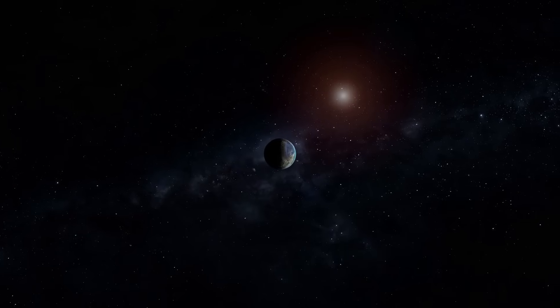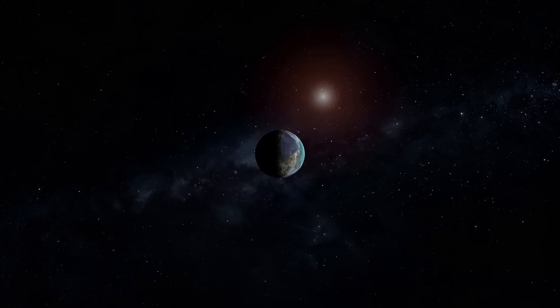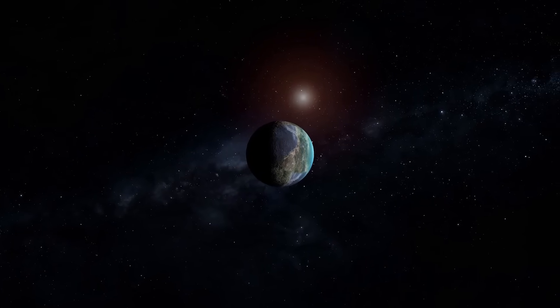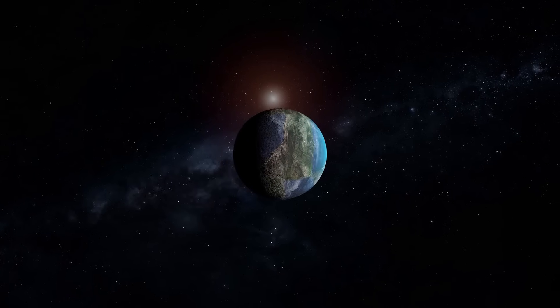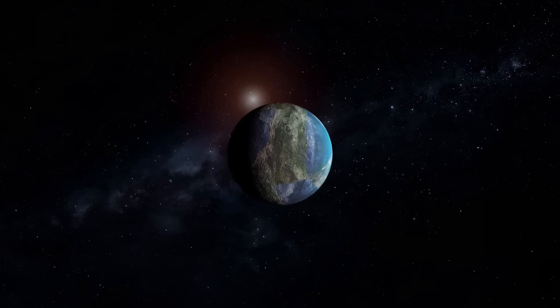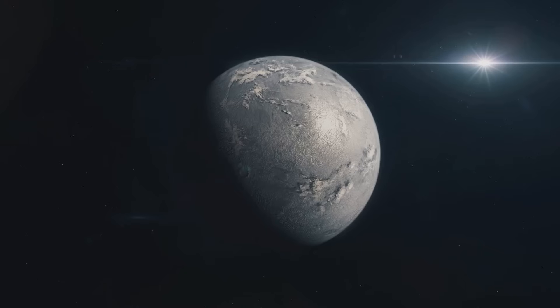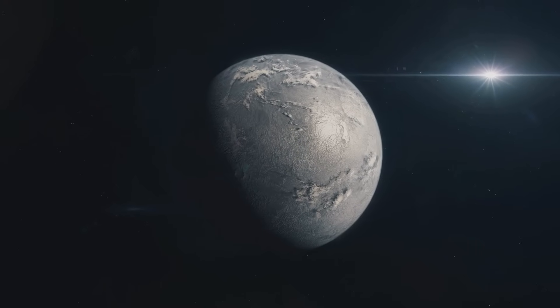Although it's larger, it orbits in the habitable zone of its star, making it a potential home for life. Then there's Gliese 667cc. This planet, located 22 light-years away, receives nearly the same amount of energy from its star as Earth does from the Sun.